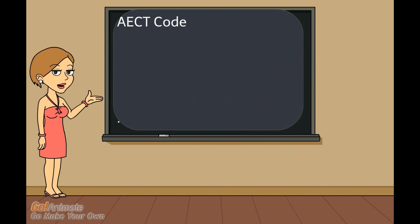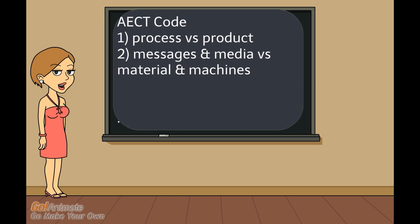There are three major shifts that contributed to the formulation of the definitions of educational technology. The first is the process concept, which emphasized the relationship between events as dynamic and continuous, and the use of the terms messages and media instrumentation rather than materials and machines. The concept of media instrumentation included the people that utilize the instruments as well as the transmission systems.